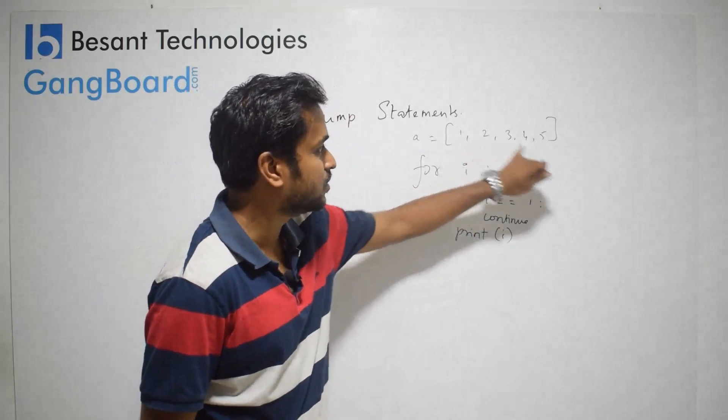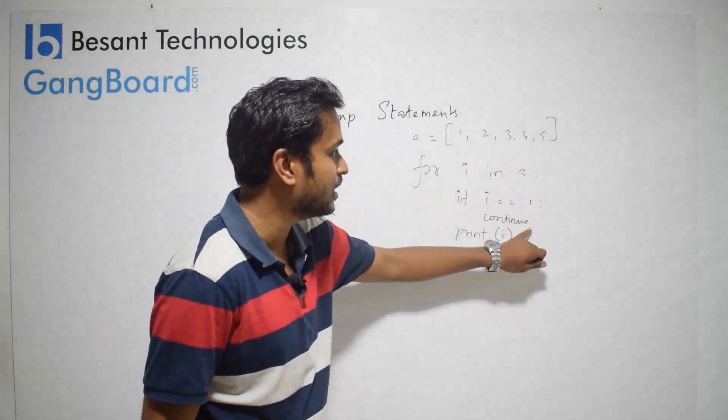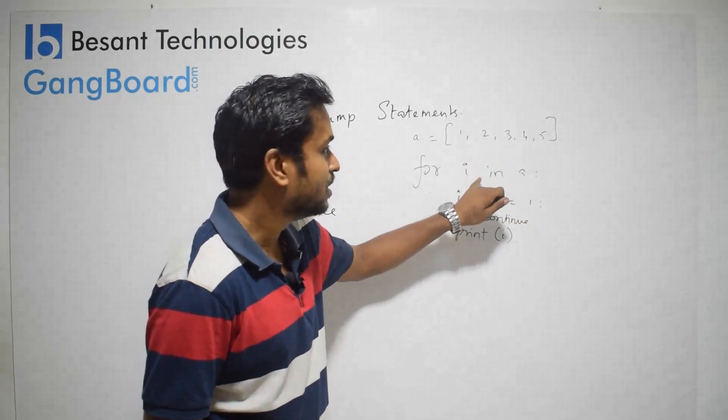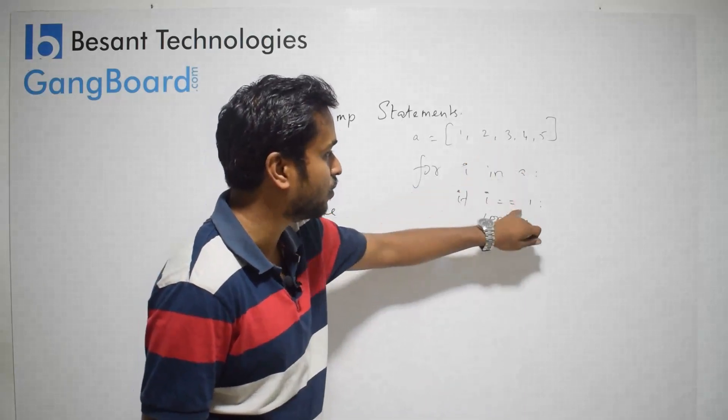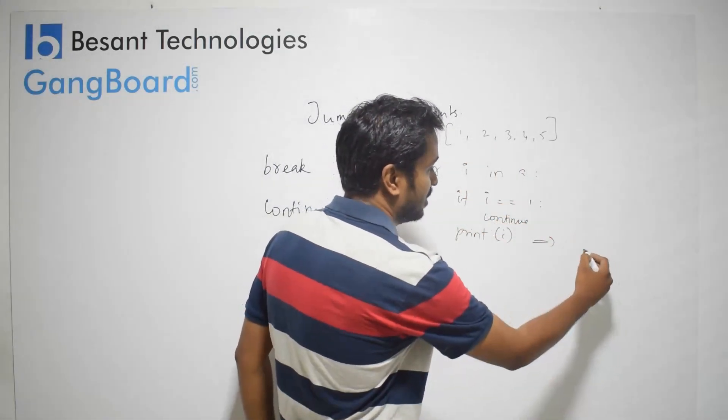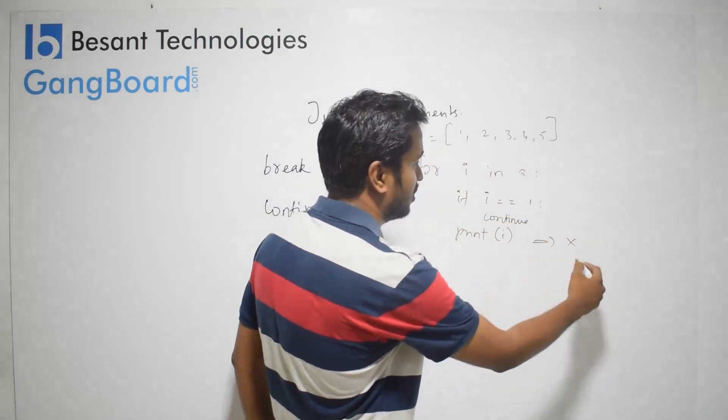i equals 1. Continue will again go to start of the for loop. So second iteration, i is 2, but print i is not executed on the first iteration. First time, 1 is the condition.